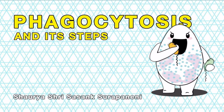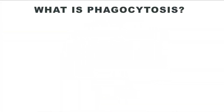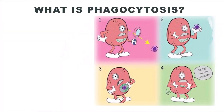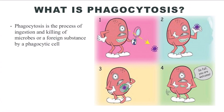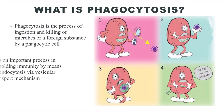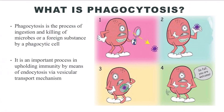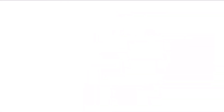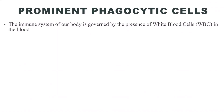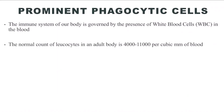An important process pertaining to the defense mechanisms of the body is phagocytosis. Phagocytosis is the procedure by which microbes or foreign substances are killed and engulfed by special phagocytic cells. These cells follow the mechanism of endocytosis to engulf and digest foreign particles. The immune system of our body is dependent on the presence of several types of cells called white blood cells or leukocytes.